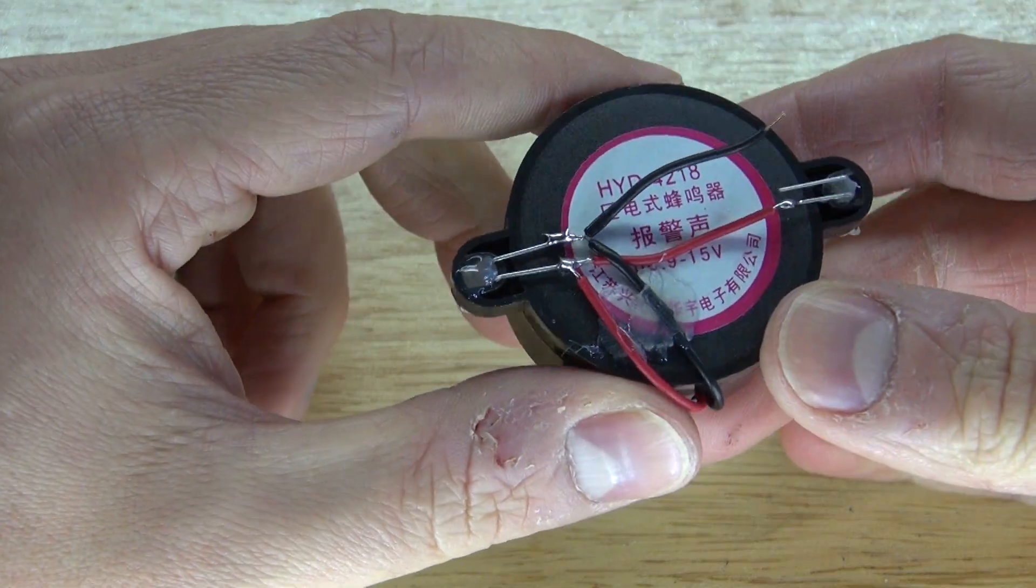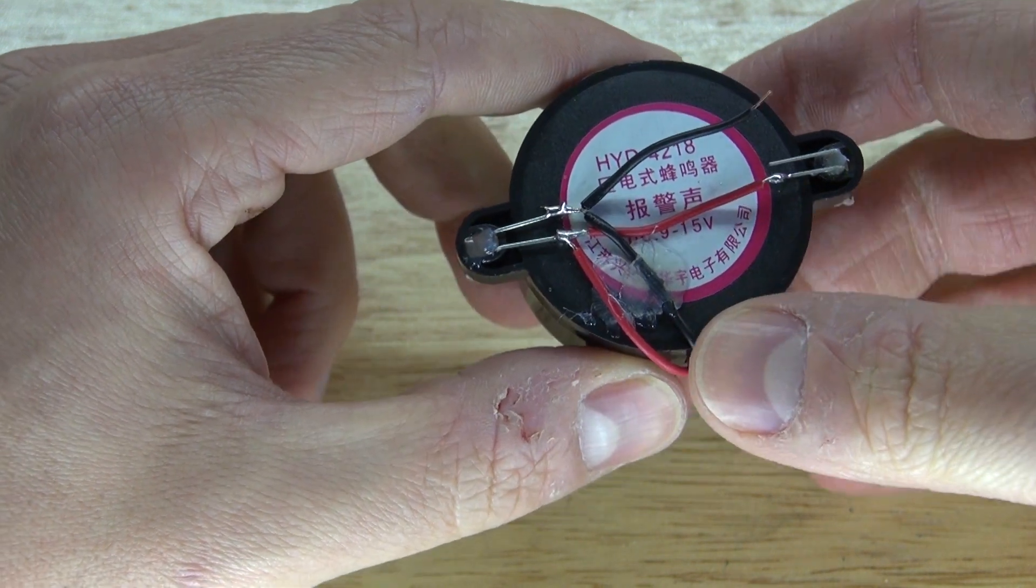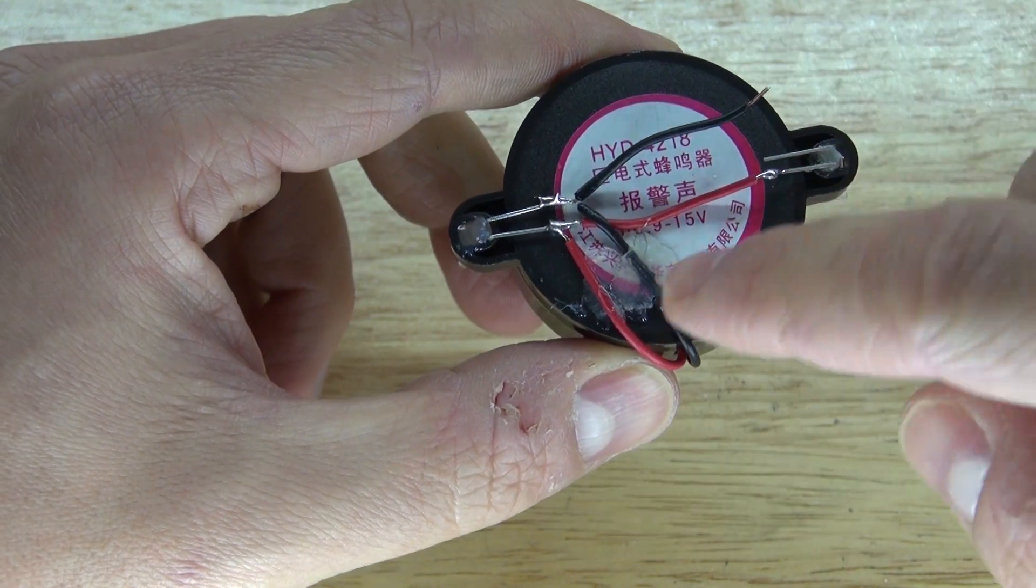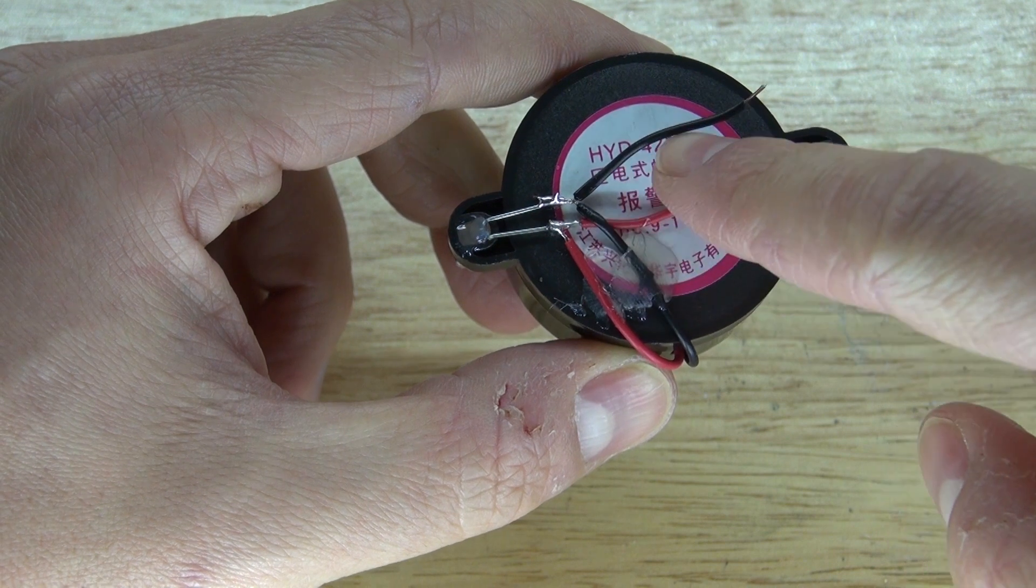As you can see I repeat the same process for the negative wire. Except I haven't connected the other wire to the other cathode because I want to connect the probe in between.